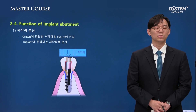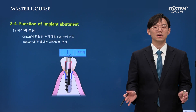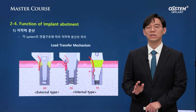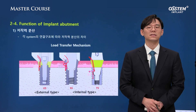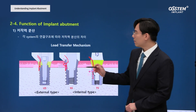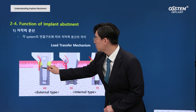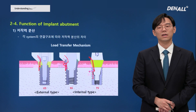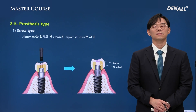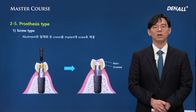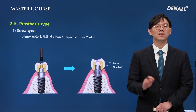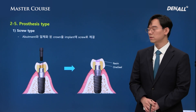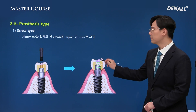The occlusal force applied on the crown is delivered to the abutment and implant, and ultimately to the alveolar bone. The occlusal force needs to be distributed evenly to allow the implant prosthesis to function stably. When occlusal force is applied in the US and SS systems, there is a vertical stop that prevents deviation of the abutment. On the other hand, TS does not have a stop against vertical force. In screw-type prosthesis, one-piece abutment and crown are connected using a screw; after connection, one seal is placed and resin filling is done.